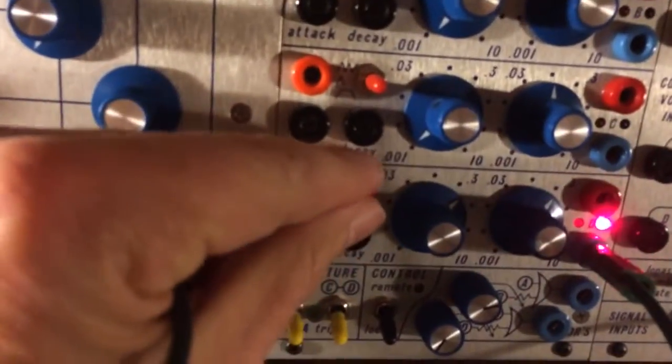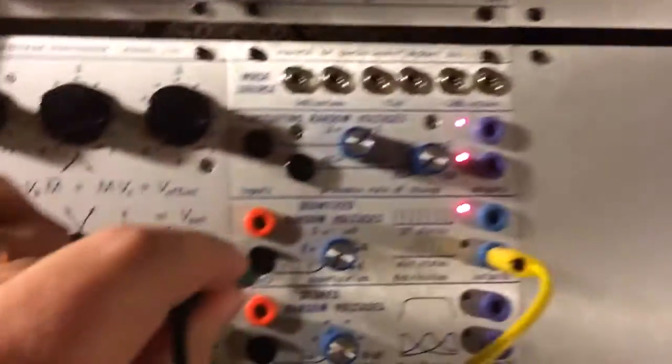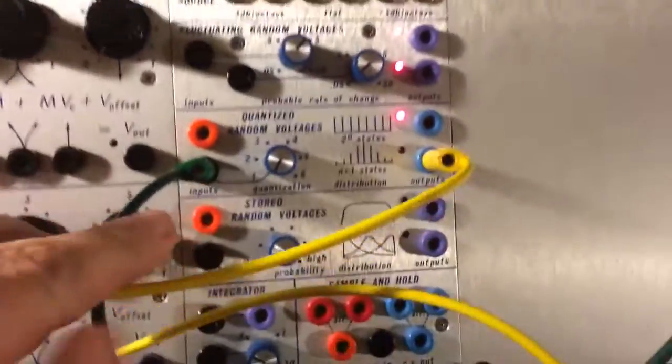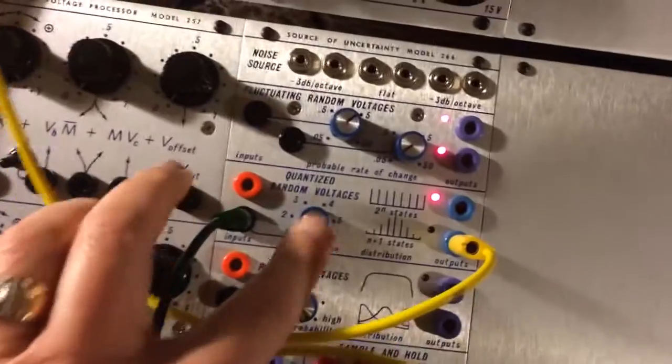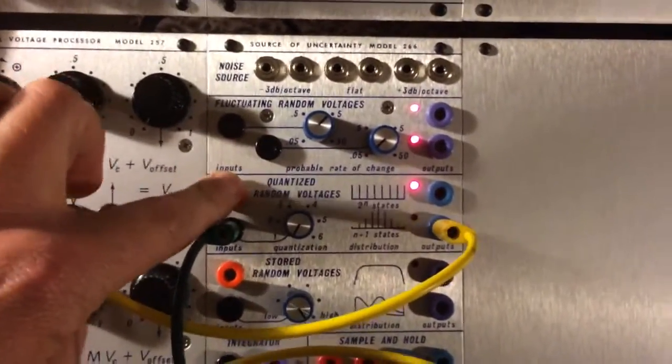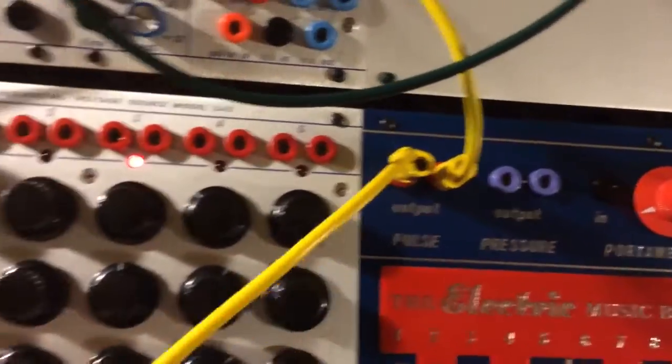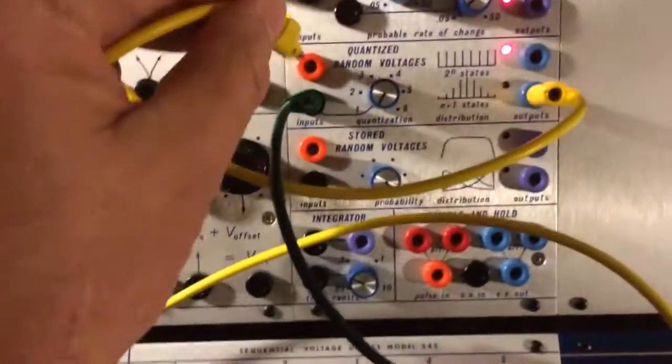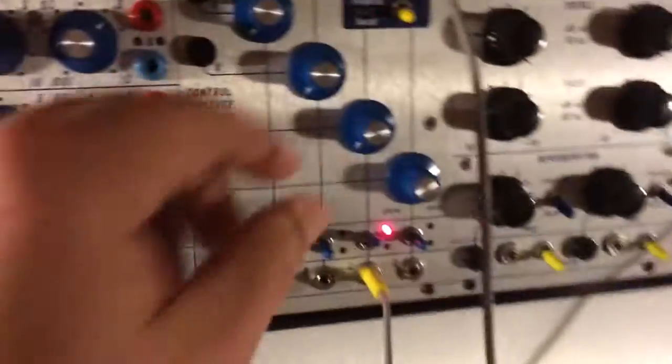And let's take it off of loop, the 281 off of loop, put it into the CV. Same input, quantization input. And this time let's pulse it. But let's use the 218 to create a pulse. Turn it up.